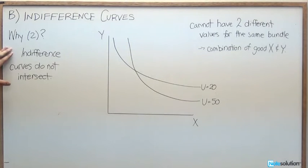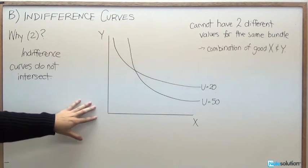So now we're going to look at the second property of indifference curves. And the second property says that indifference curves do not intersect. So what exactly is going on here?